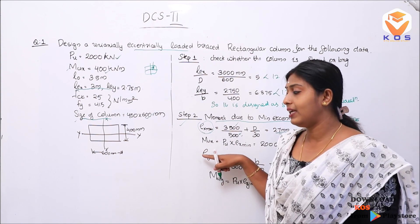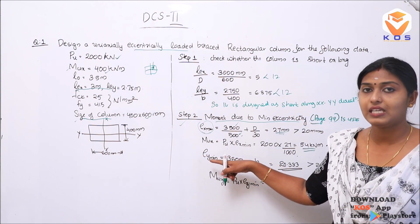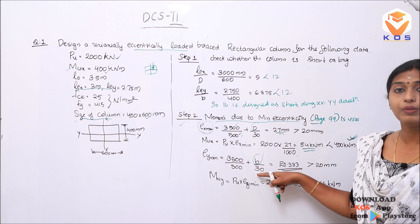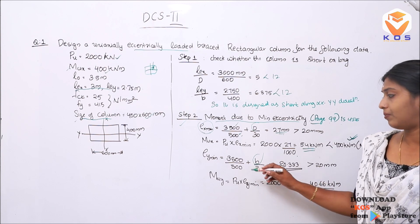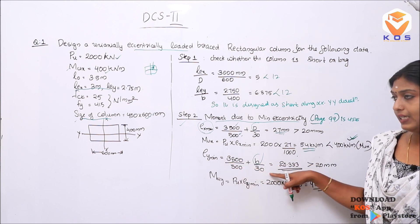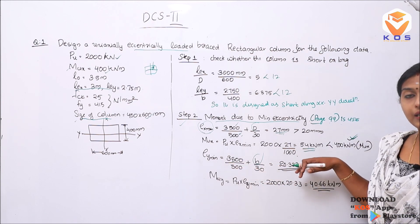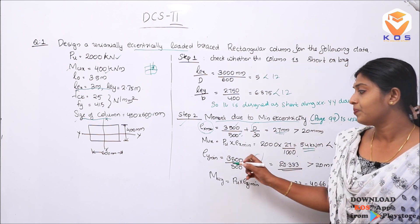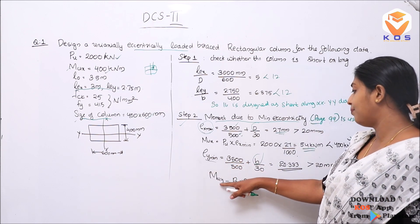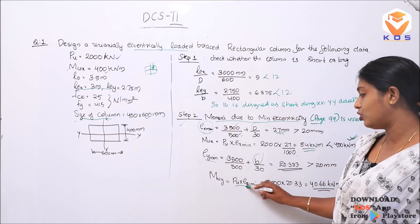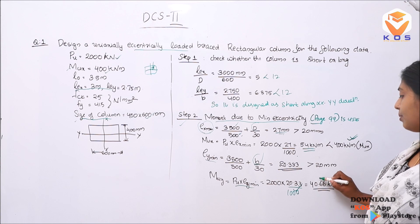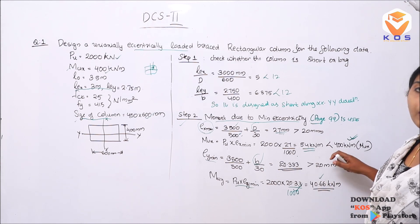Next, we calculate eccentricity in the y-direction: eY minimum = L0/500 + B/30 = 3500/500 + 400/30. The answer is greater than 20 mm. The moment due to minimum eccentricity in y-direction: EMuY = PU × eY minimum, divided by 1000 = 40.66 kNm. We do not need to compare this further since the given moment governs.